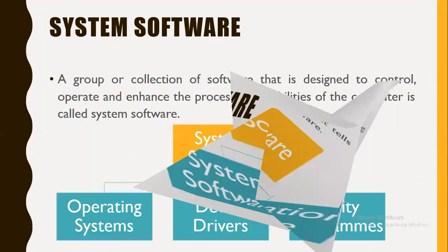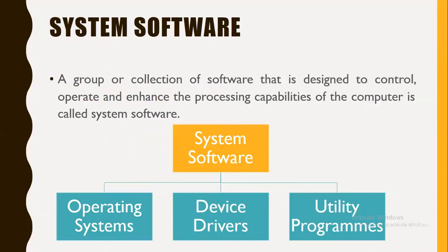First of all we will discuss system software, which we covered in our previous video. System software is a group or collection of software that is designed to control, operate and enhance the processing capabilities of the computer. We can also say it is the basic software required to operate the computer. If system software is absent, the computer is just dummy hardware which is of no use.